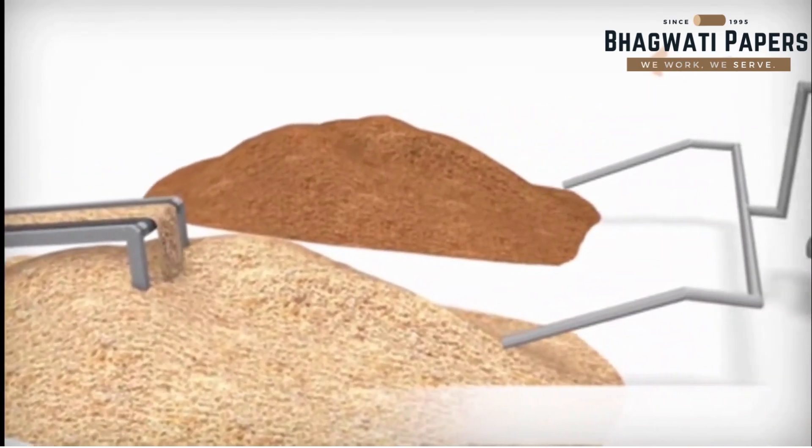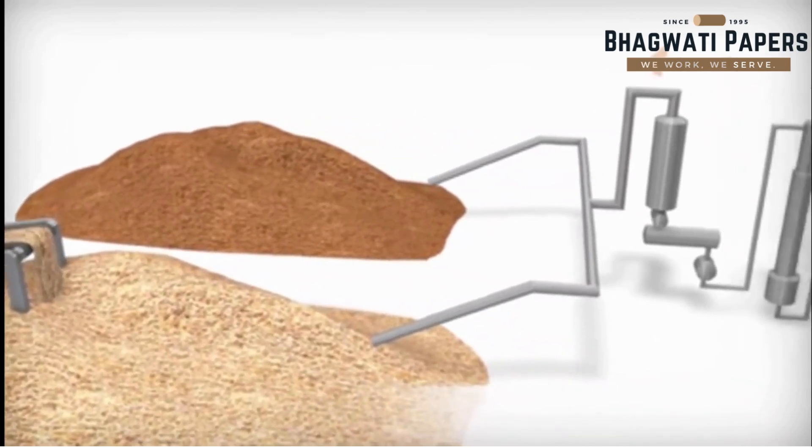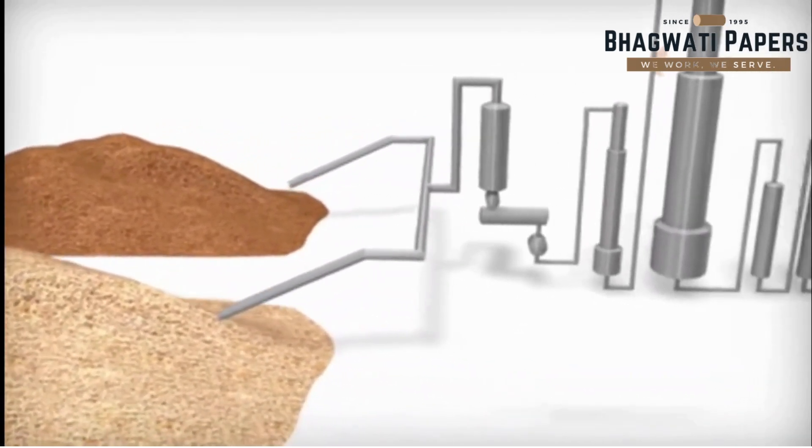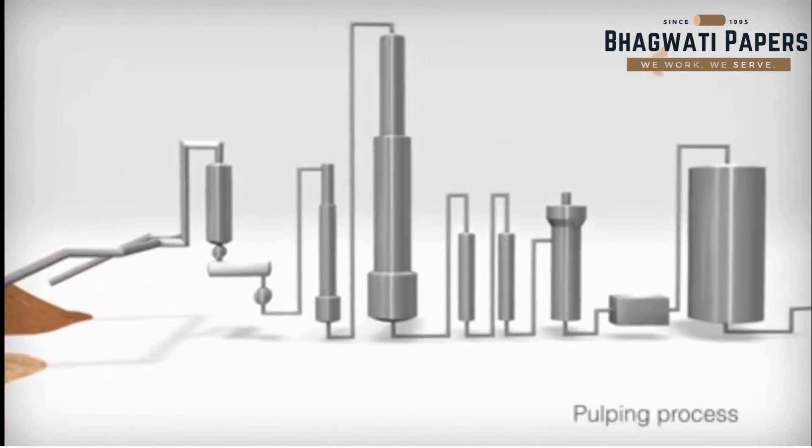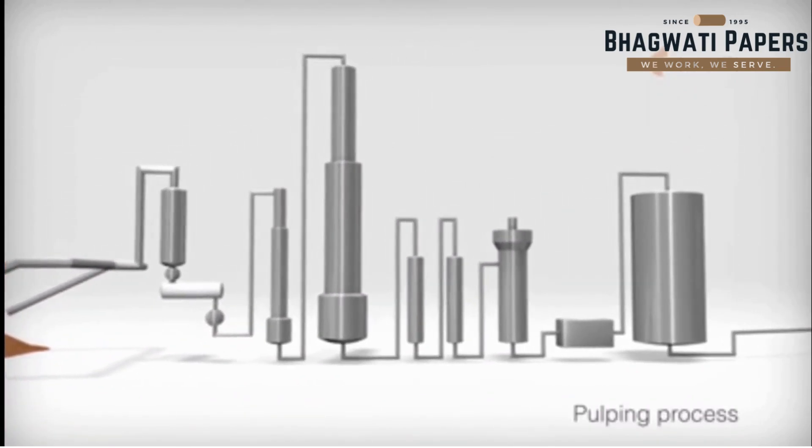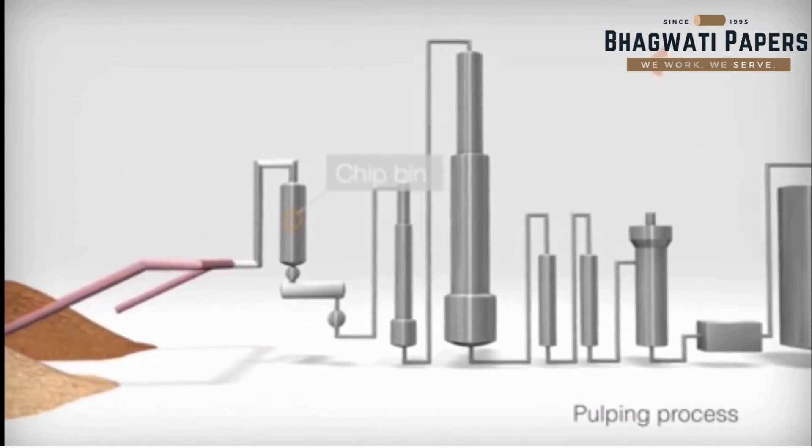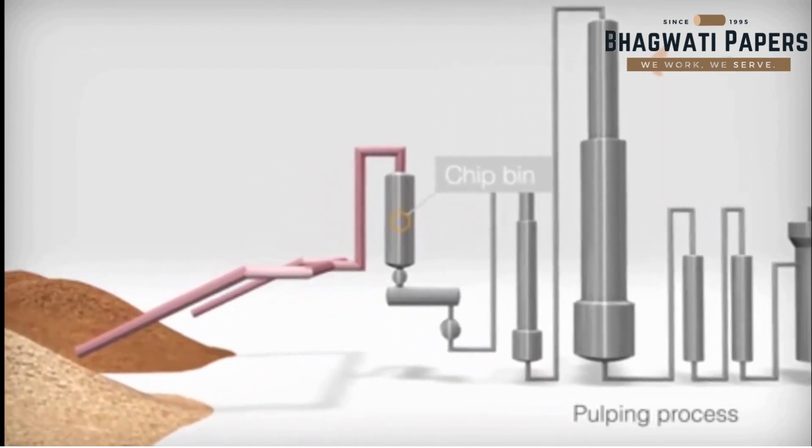The primary task of the pulping process is to separate the fibers by using cooking chemicals. This illustration shows a continuous sulphate process, beginning with the chip bin, where the chips arrive from the wood yard.